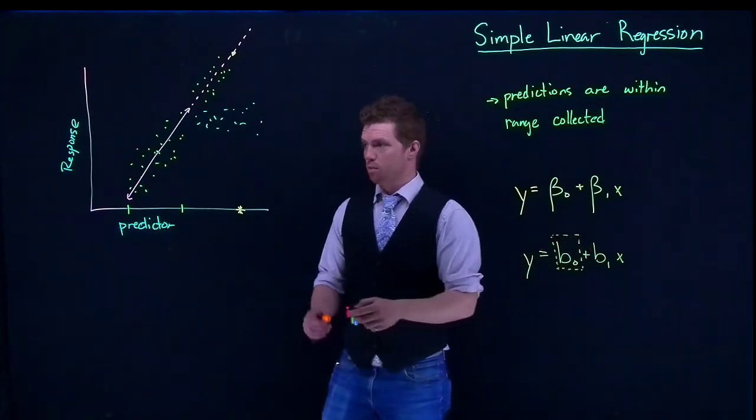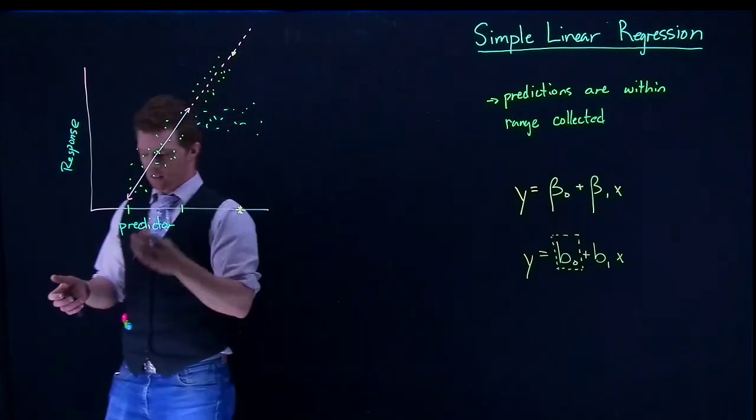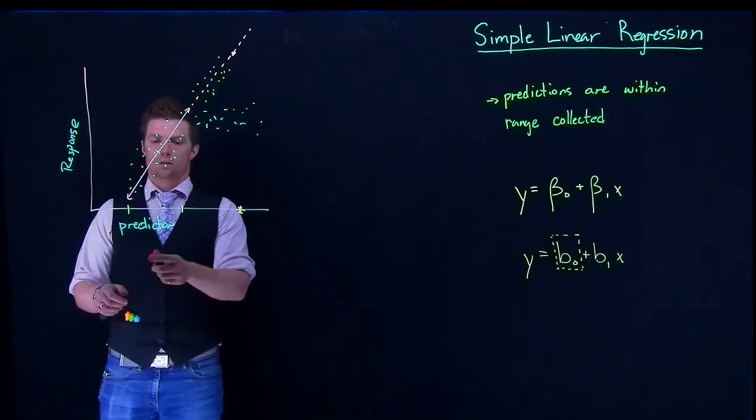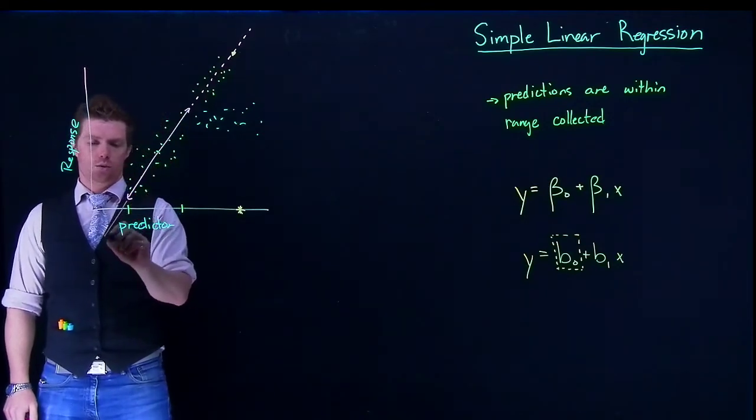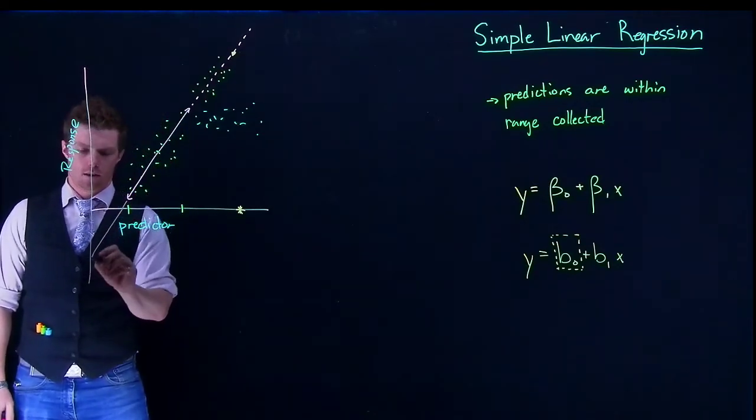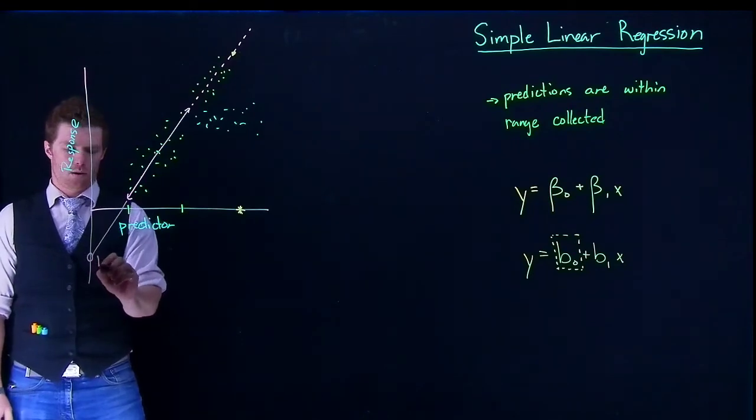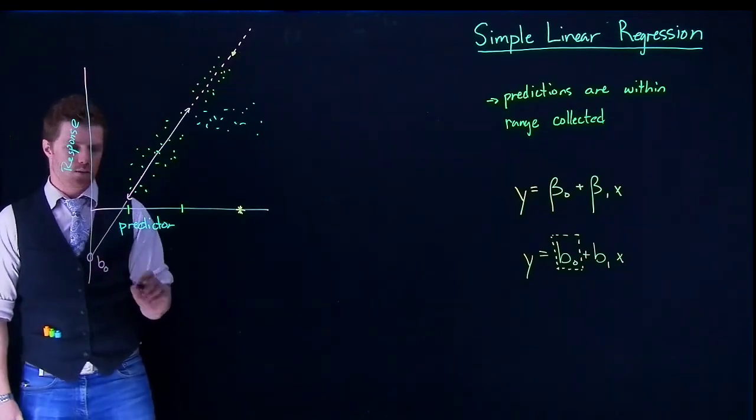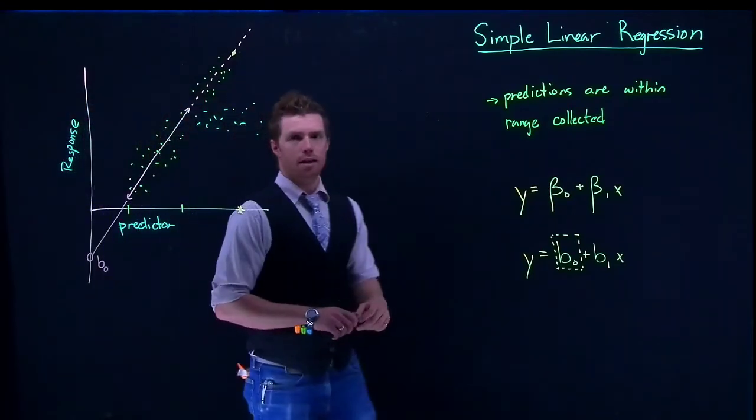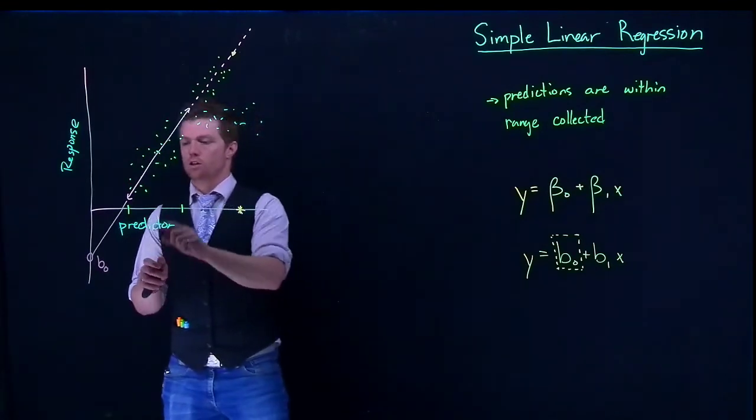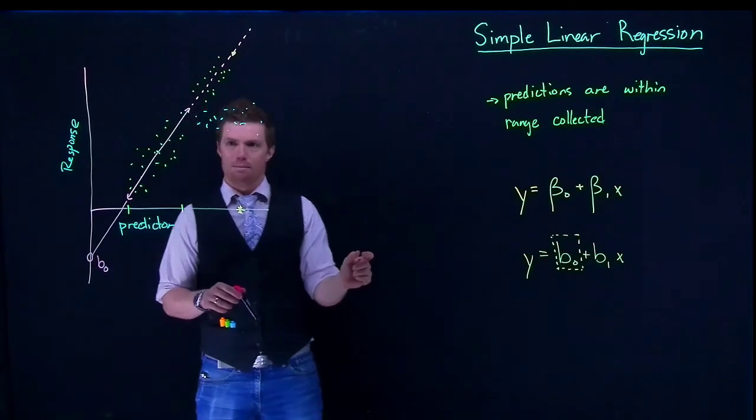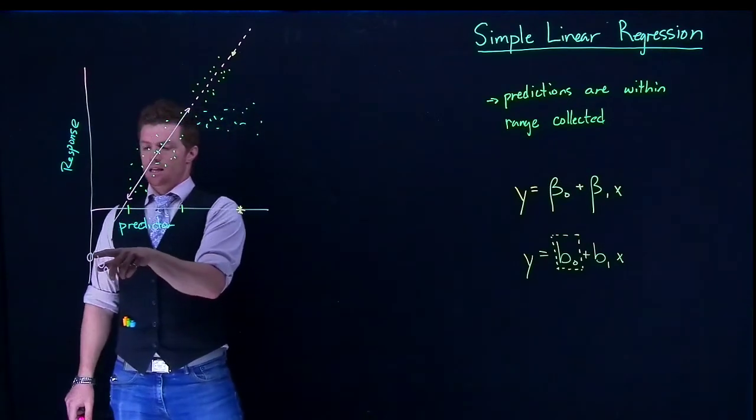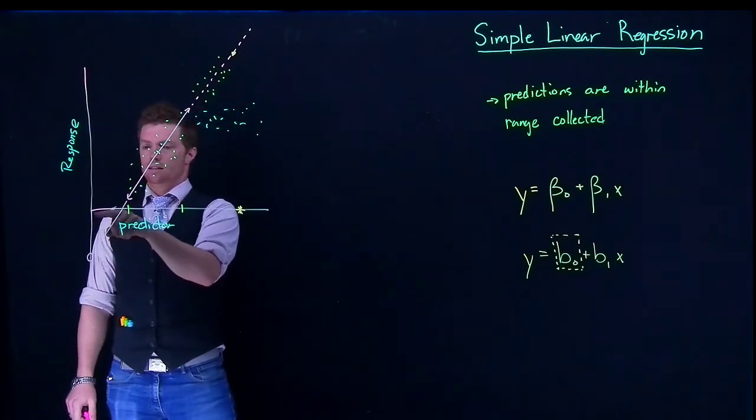So let's take this example where we're doing tree width and tree height. And so here if we continue on down, this is where our b0 would be. And so if we interpreted it, it would be like okay, if our tree has basically zero width or maybe, you know, like a teeny tiny amount of width, then the height of the tree is negative.